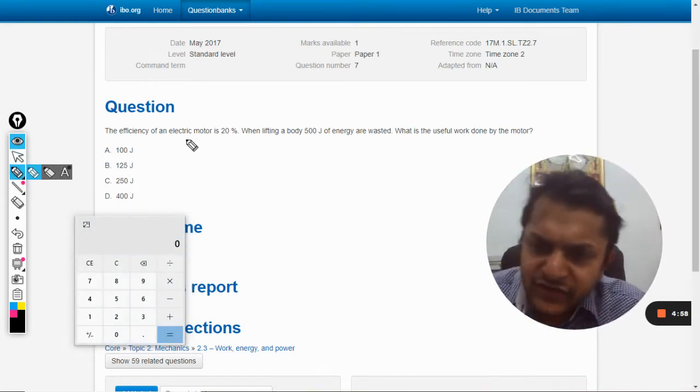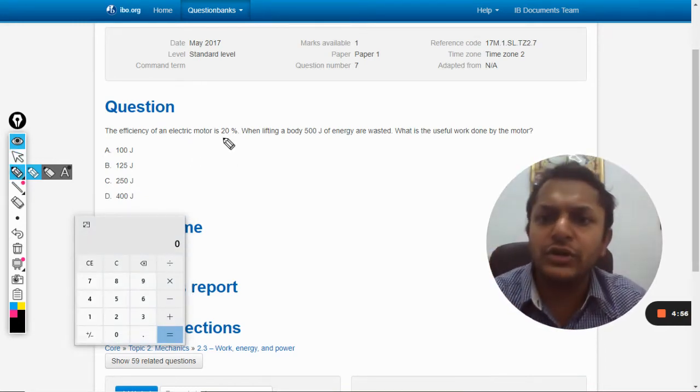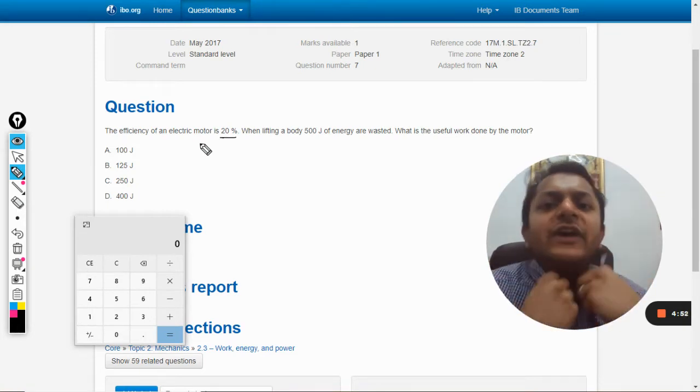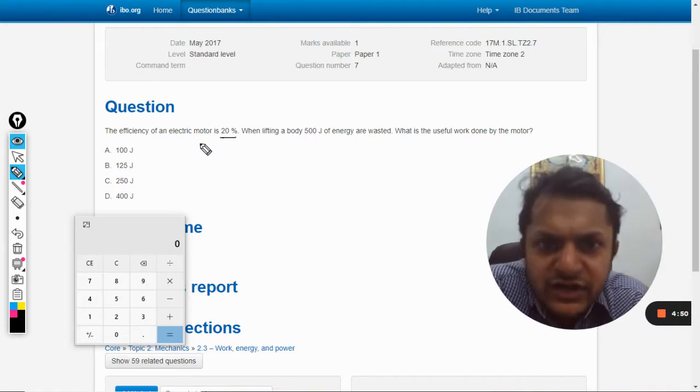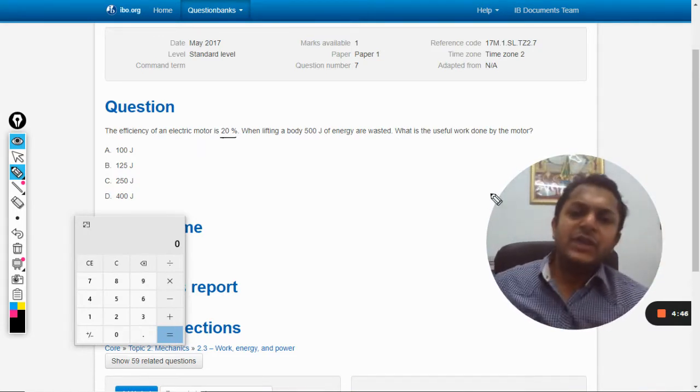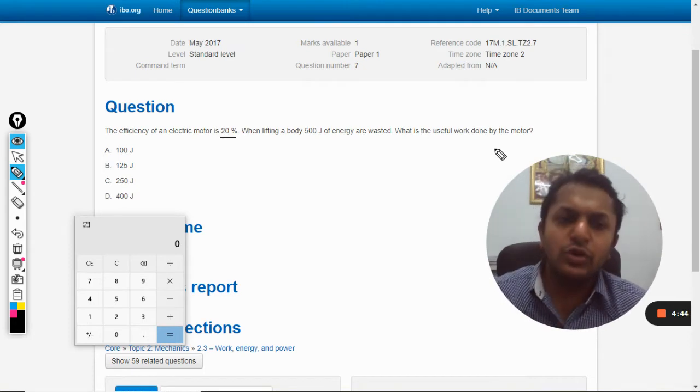Okay, so the efficiency of the electric motor is given as 20 percent when lifting a body. 500 joules of energy was wasted. What is the useful work done by the motor? Okay fine, so let us say the motor has given us the total energy.